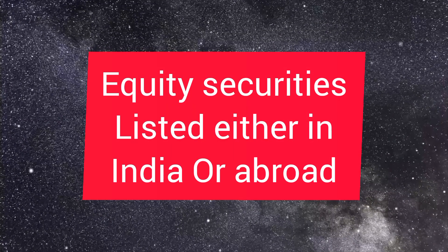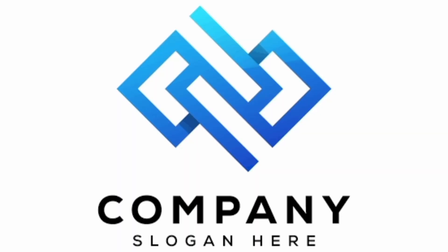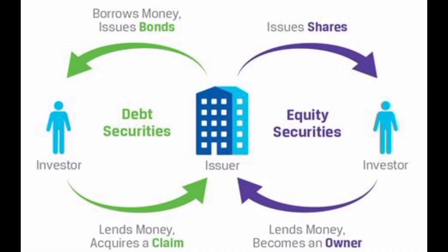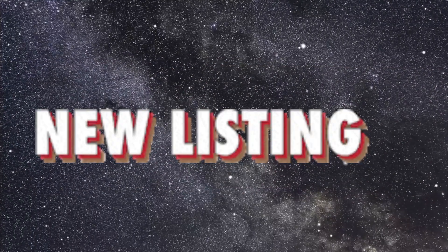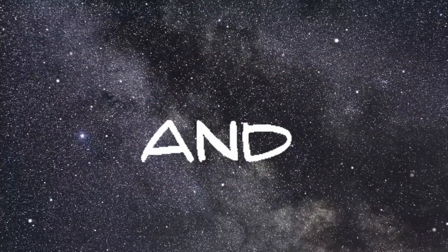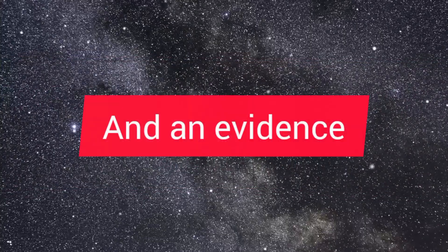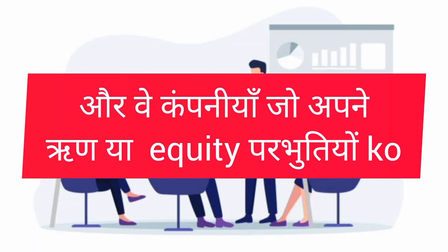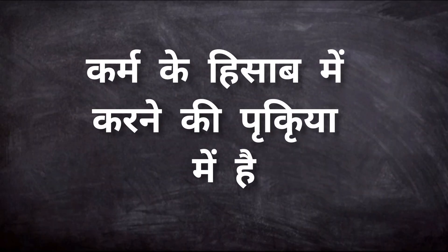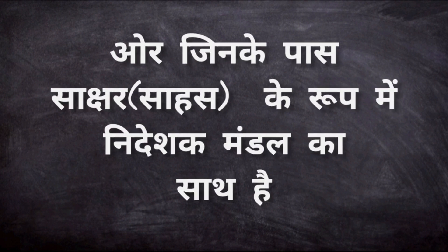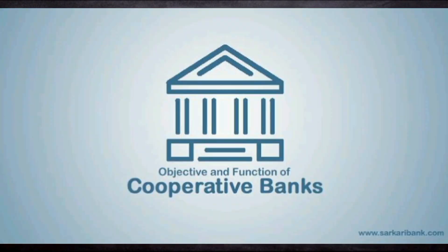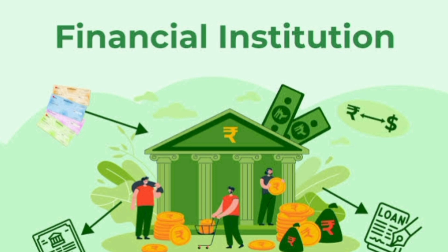Level 1st companies include those that have debt or equity securities listed either in India or abroad, or that are in the process of listing their debt or equity securities. Also included are companies in terms of equity, including Co-operative Banks, and those that execute insurance businesses.